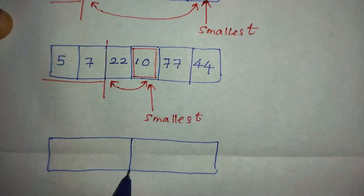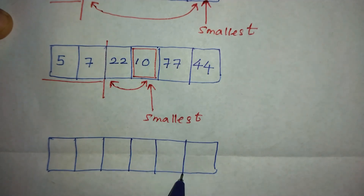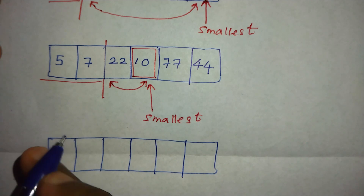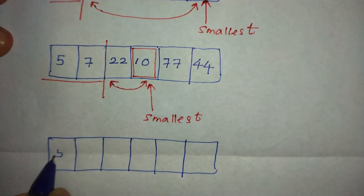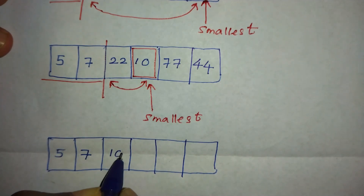It's a very simple mechanism. Each time we are separating the array into two separate parts: a sorted sub-array and an unsorted sub-array.